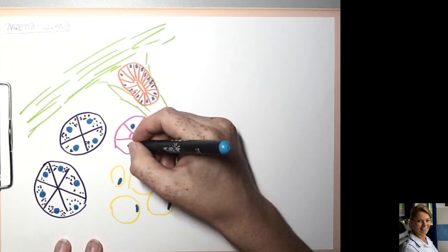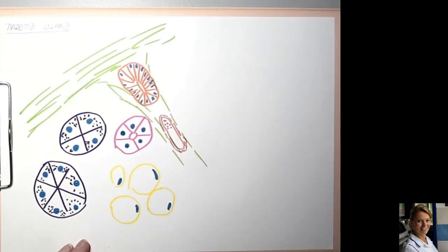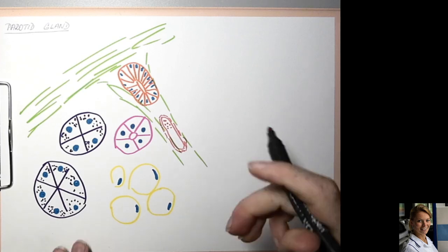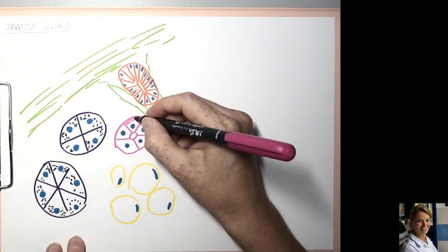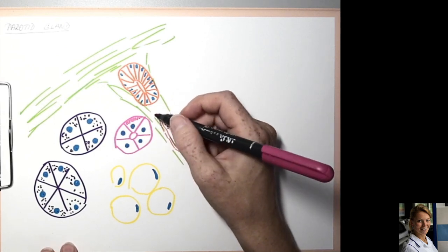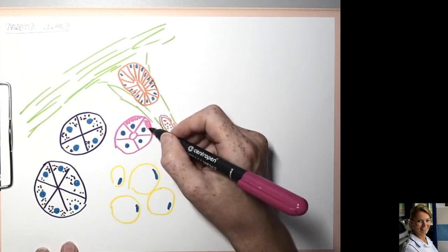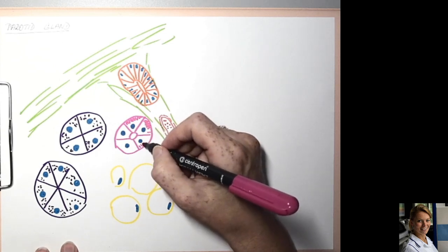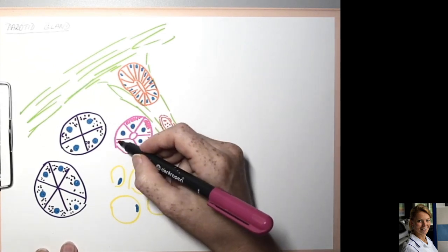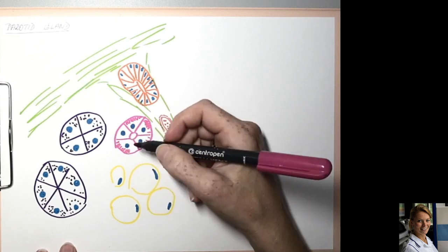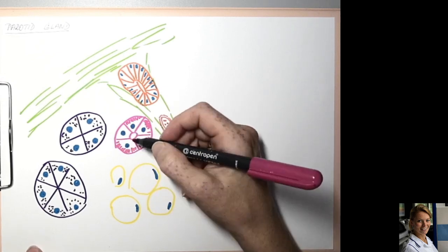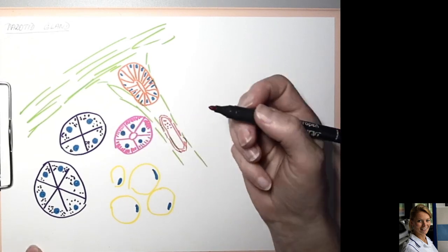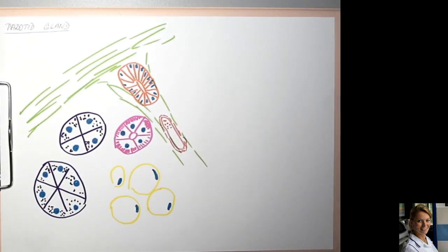Striated ducts also contain basal lateral infoldings visible microscopically as a striation of the cytoplasm. Mitochondria are located between these infoldings, so these cells are eosinophilic with a very intense pink color.